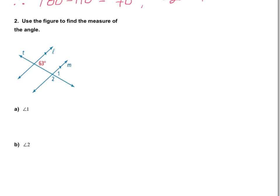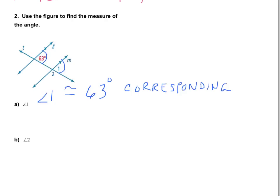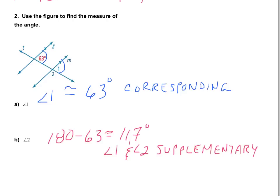Now it's your turn. Find the measure of angle 1 and angle 2 from the picture, and make sure you give a reason for each angle measure. Press pause to try it, then resume for the answers. Because angle 1 and the given 63-degree angle are corresponding angles — meaning they are in the same location on different parallel lines — angle 1 is also 63 degrees. For angle 2, since angles 1 and 2 form supplementary angles, we take 180 minus 63 to get 117 degrees.